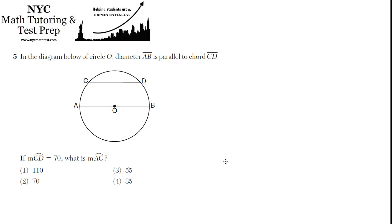In the diagram below of circle O, diameter AB is parallel to chord CD. If the measure of arc CD equals 70 degrees, what is the measure of AC?